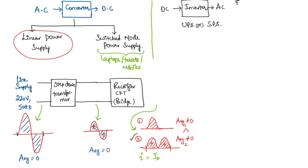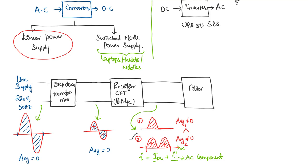The current at the output of the rectifier has a DC component — the average is positive — plus an alternating component, which we call the AC component. So the rectifier output has both a DC component and an AC component. We can filter out the AC components by placing a filter at the output of the rectifier. Hence we add a filter circuit block to filter out the AC component.